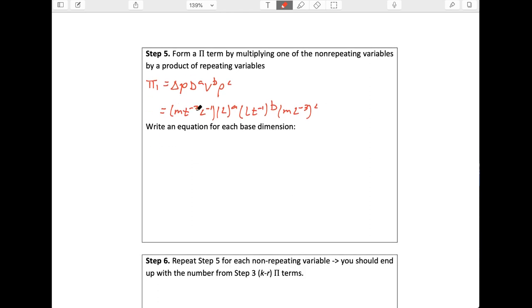So now we can write three equations, one for mass, one for length, one for time. The mass equation tells us mass here to the one over here to the C has to equal zero if we want the mass, if we want it to be unitless. The length looks like minus one plus A plus B minus three C equals zero. And the time looks like minus two minus B equals zero.